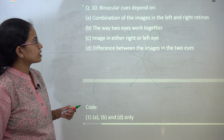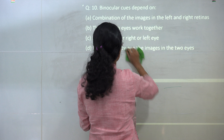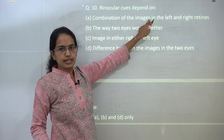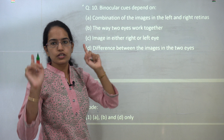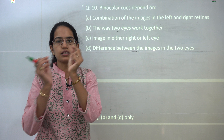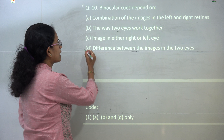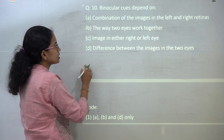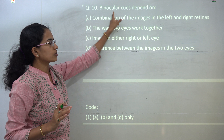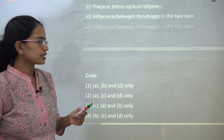The next question: binocular cues depend on the use of both eyes — the image is formed by both eyes together. The combination of images in the right and left retina is correct; the way two eyes work together is also correct. The difference between images in the two eyes, given the approximately 6-centimeter distance between them, creates stereopsis. Therefore, A, B, and D are the correct choices. For other animals, monocular vision applies. This will be discussed in more detail in the upcoming perception topic.